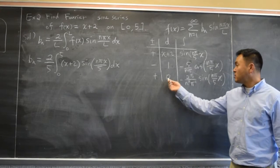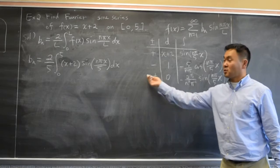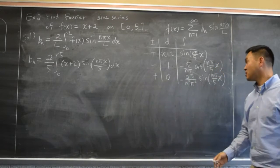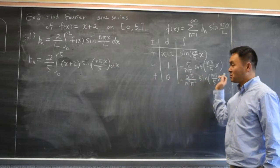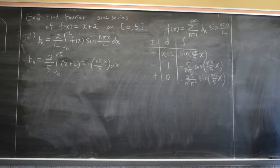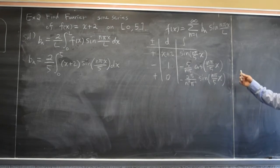And by the way, if this is not 0, then you also have to integrate the last row. That's the downside of the tabular integration. Sometimes if this is not 0, then it gets a little more involved. But for our case, it's perfect.